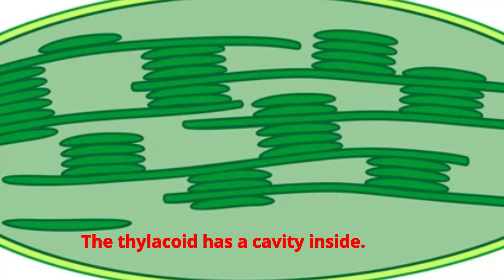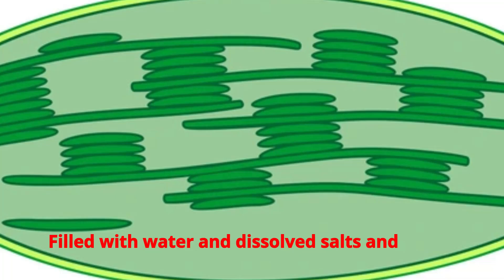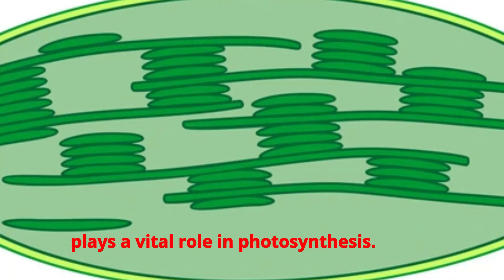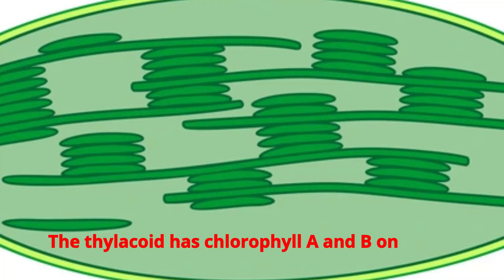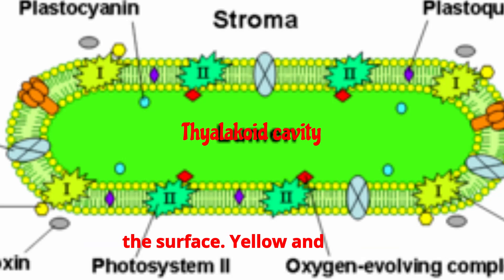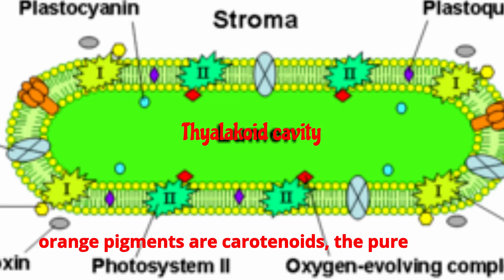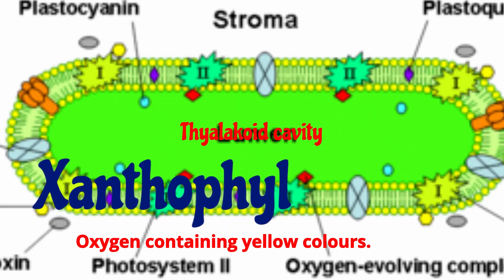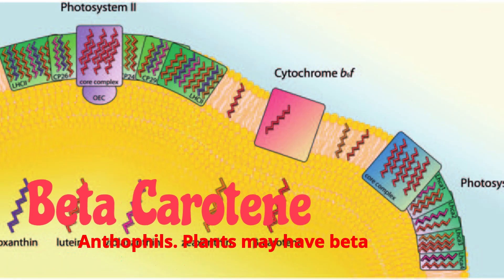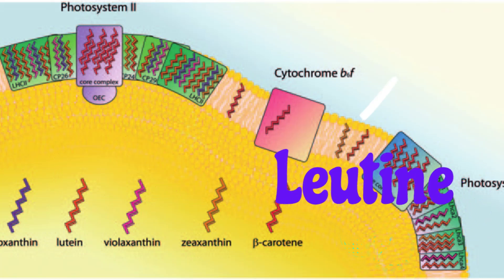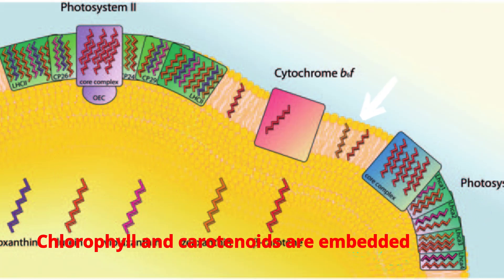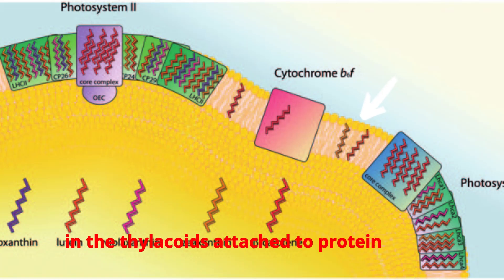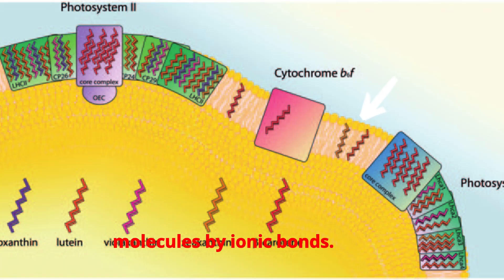The thylakoid has a cavity inside, filled with water and dissolved salts, and plays a vital role in photosynthesis. The thylakoid surface has chlorophyll A and B. Yellow and orange pigments are carotenoids — the pure hydrocarbon carotenes, and oxygen-containing yellow-colored xanthophylls. Plants may also have beta-carotene and lutein. Chlorophyll and carotenoids are embedded in the thylakoids, attached to protein molecules by ionic bonds.